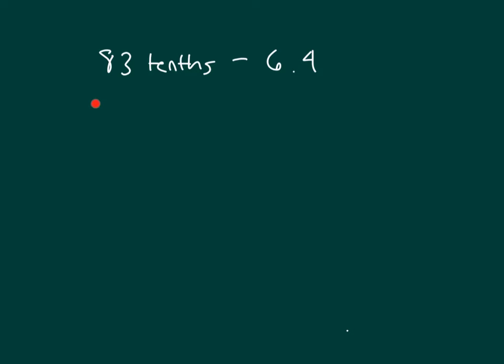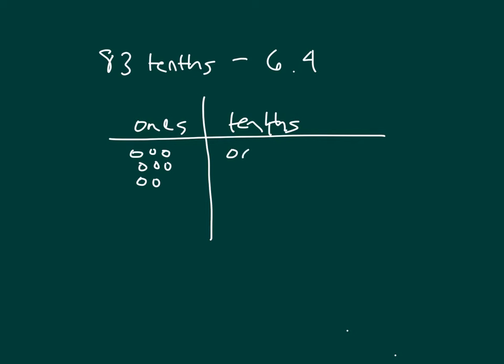Here's another problem, 83 tenths minus 6.4. Let's use a place value chart. And we'll model our first number, 83 tenths. 83 tenths is equal to 8 ones and 3 tenths.